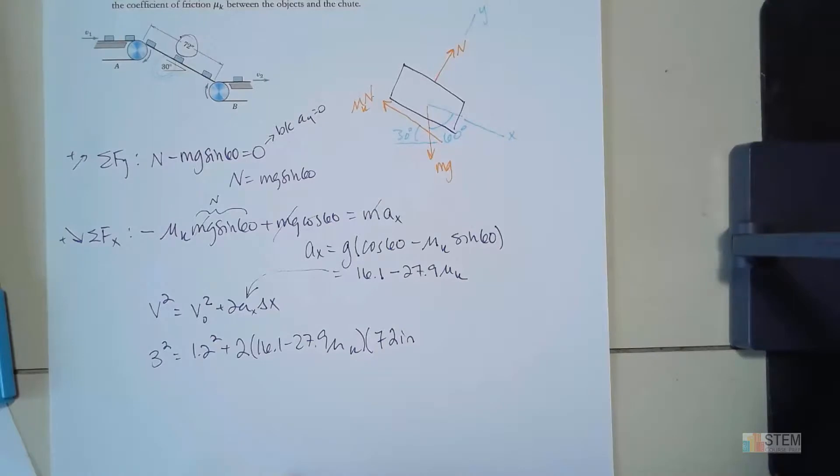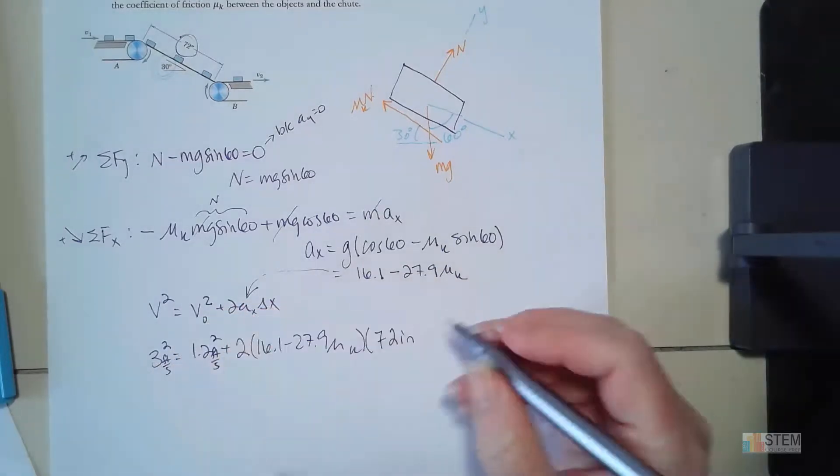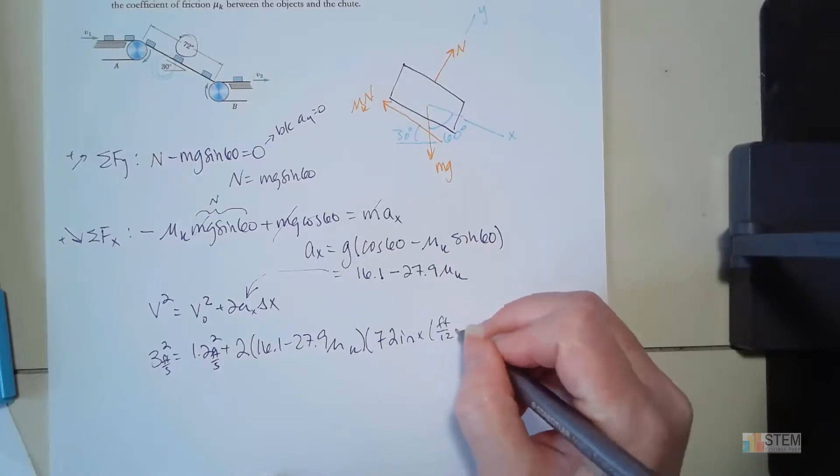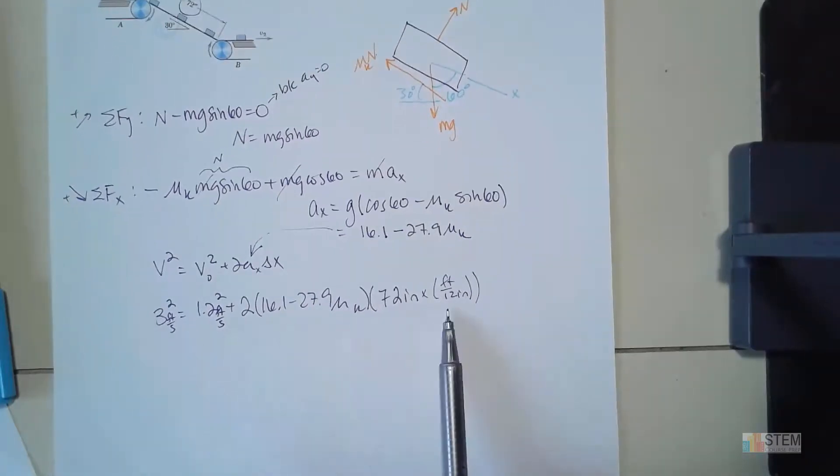Now do I want to leave it in inches? No, because these are feet per second. I didn't write it in here but that's what they are. So we want to convert this. We need to divide by 12. So now we're left with this. The only unknown here is mu, so now we'll be able to solve.